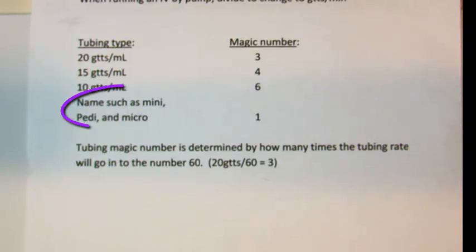When dealing with tubing that has a name associated, such as mini, PD or pediatric, and micro or micro drip, the number associated with this tubing as its drip factor is 60. Therefore, the magic number for named tubing is 1.